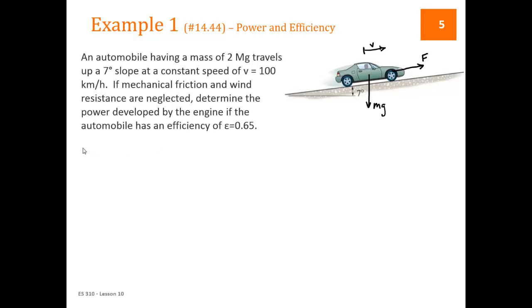So the engine is causing the wheels to turn. There's friction between the wheels and the road. And that is what causes the car to go up. So there's some sort of engine force here that behaves as if it were pulling the car up the hill. So that's F. We're supposed to figure out what the power developed in the engine is if it has an efficiency of 0.65. So let's start with the equation for power. Power is equal to force times V.